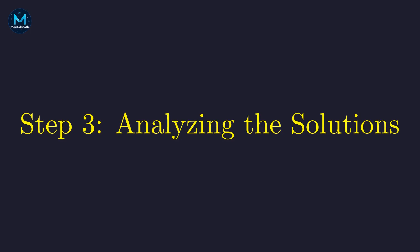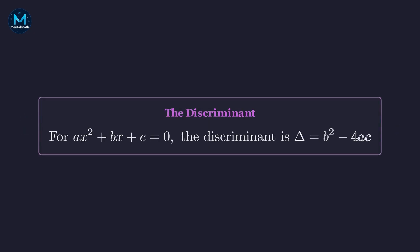Before solving, let's use the discriminant to see what kind of solutions we're going to get. The discriminant is this expression b squared minus 4ac. It tells us whether we have real or complex solutions. Positive means two real solutions, zero means one, and negative means complex solutions.